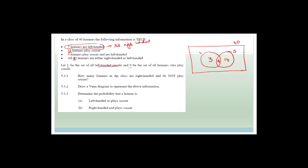How many learners are right-handed and do not play soccer? That would be everybody outside of the two circles. So we take 3 + 4 + 14 = 21, and subtract from 40, which gives us 19 learners that are right-handed and do not play soccer. Now it says determine the probability that a learner is left-handed or plays soccer.